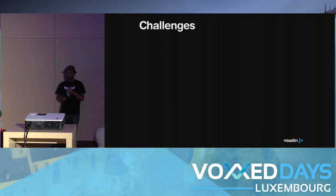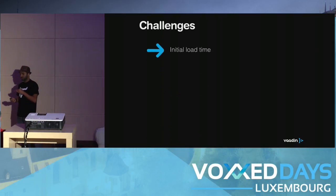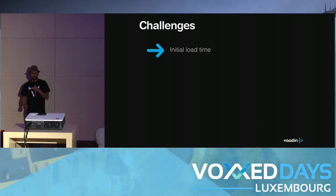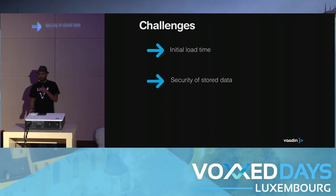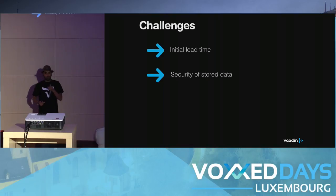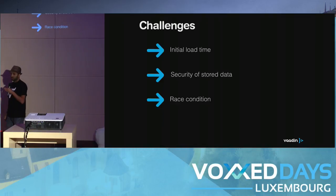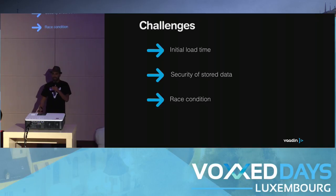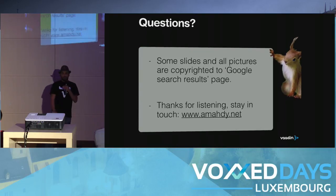Now let's talk about challenges. First, you don't want to load everything — downloading all data at the beginning is not the best solution, so you need to select what kind of data needs to be downloaded to the browser. Second is security — implement authentication so that if a user logs out, the data is wiped and not accessible except from this domain. Third is race conditions — if a modification has been done offline, what is the best strategy to update data if it also got changed online somewhere else?